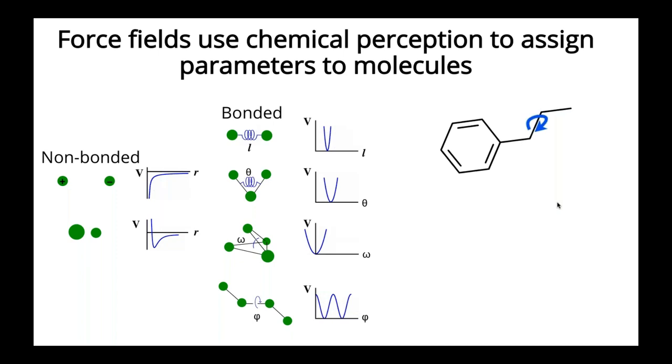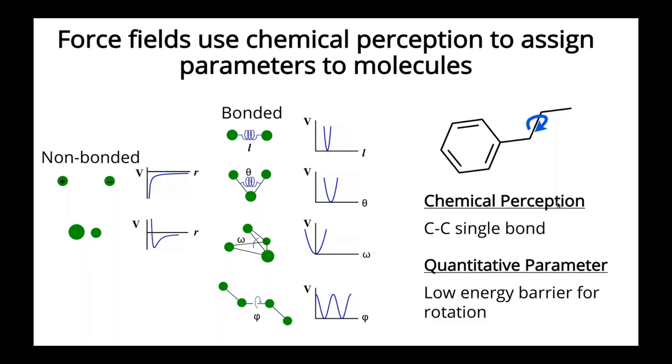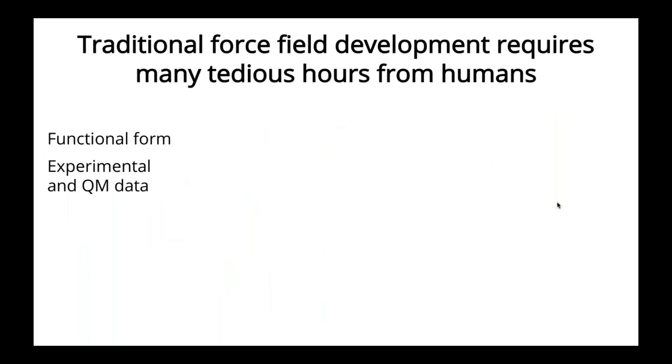And the way that we think about force fields is that it can be broken down into two pieces. So for example, if I want to assign a parameter such as a torsion to this molecule, we need a piece that we're calling chemical perception or the way that the force field sees that this bond is a single bond between two carbon atoms, and then a quantitative parameter. So in this case, that would be a low energy barrier for the rotation around that bond.